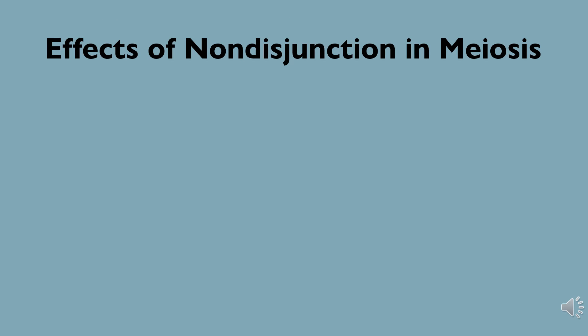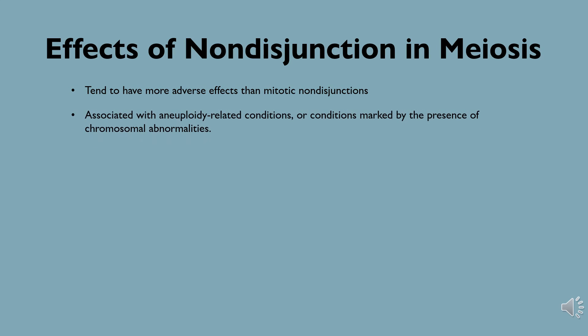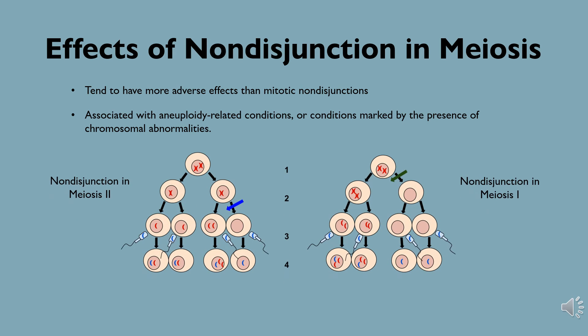Now let's take a look at the effects of nondisjunctions that arise in meiosis. Nondisjunctions that occur during meiosis tend to have more adverse effects than mitotic nondisjunctions, and are associated with aneuploidy-related conditions, or conditions marked by the presence of chromosomal abnormalities. This is because chromosomal errors that arise during meiosis create abnormal gametes that can propagate chromosomal abnormalities to offspring. If a zygote is formed from a gamete that has experienced a nondisjunction event, the resulting offspring will have an extra or missing chromosome in every cell of their body.